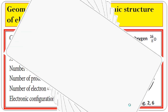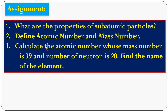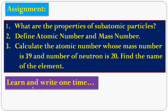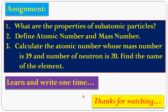Now come to the assignment. You have three questions. First: What are the properties of subatomic particles? Second: Define atomic number and mass number. Third problem: Calculate the atomic number Z whose mass number is 39 and the number of neutrons is 20, and find the name of the element. Learn these three questions and write them. Thank you, students.